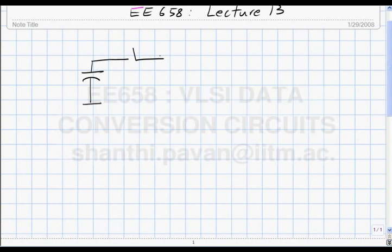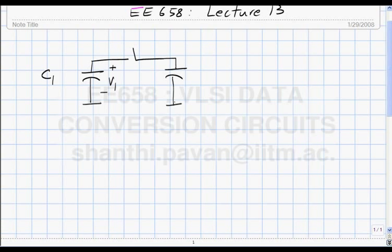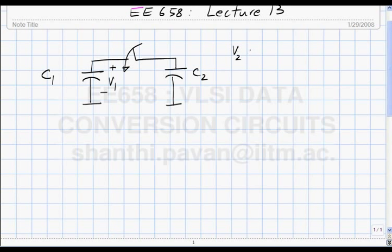Let us take the simplest case we can think of. We have a capacitor C1 charged to a voltage V1, connected to a capacitor C2 which was initially uncharged. I momentarily short the switch and open it again. What happens to the voltage on C2? What is V2 final and how do I compute it?